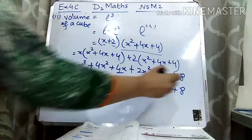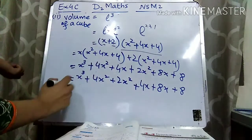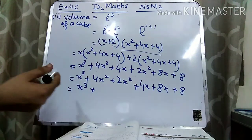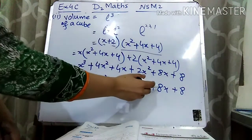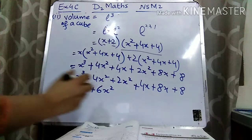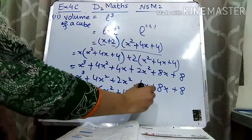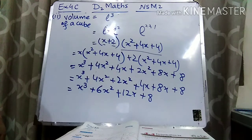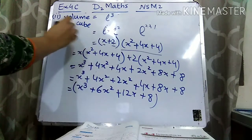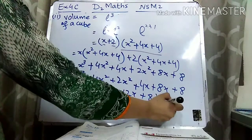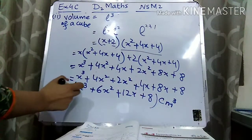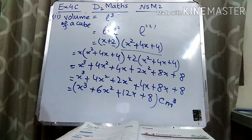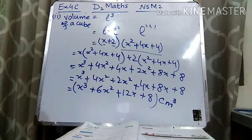4x² and 2x² are like terms because they have the same variable x². So I will write them together and solve: 4 + 2 = 6, giving 6x². Then 4x and 8x are like terms since both have the variable x. Writing them together: 8 + 4 = 12, so we get 12x. There is only one constant term, 8, so I will write it as it is. So the result is x³ + 6x² + 12x + 8.